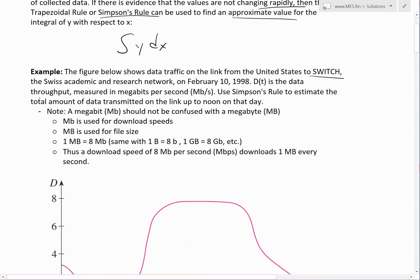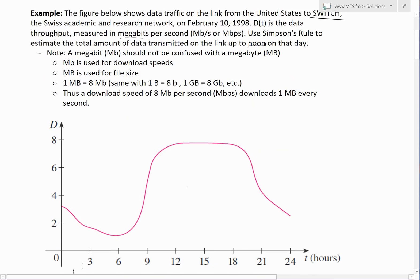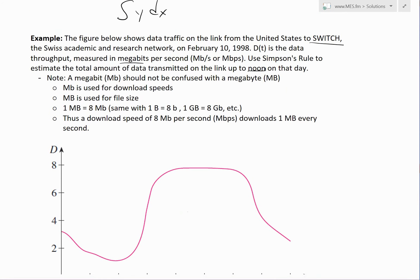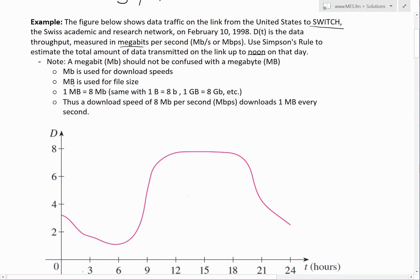Basically, DFT is the data throughput measured in megabits per second, or Mb/s or Mbps. And the question says, use Simpson's rule to estimate the total amount of data transferred on the link up to noon on that day. Before I get to this graph, so here's this figure, it goes up and down like this. Before I get to that, just an interesting note on a megabit. MB should not be confused with the megabyte, which is capital MB like that.